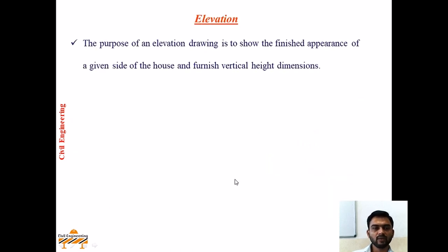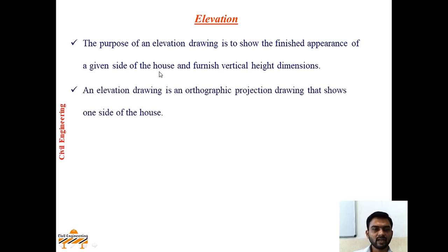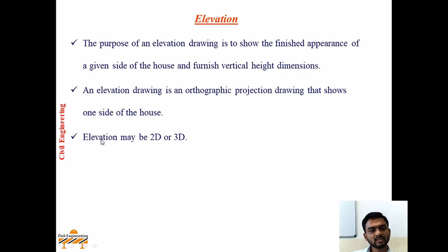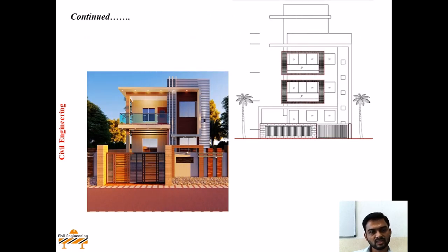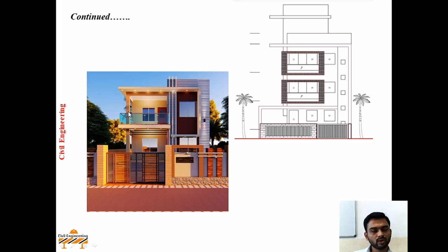Now, what is elevation? Elevation may be 2D or 3D. The purpose of an elevation drawing is to show the finished appearance of a given side of a house and furnish vertical height dimensions. An elevation drawing is an orthographic projection that shows one side of the house. In 3D elevation you can see a three-dimensional elevated view of the proposed building. In 2D elevation, only two dimensions are seen - that is length and height of the structure.